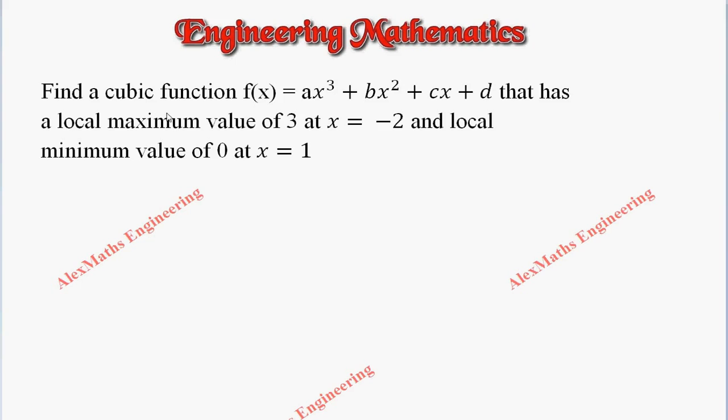In this video we are going to find the cubic function f(x) which is given as ax³ plus bx² plus cx plus d. And they have given certain information like it has local maximum value of 3 at x equals minus 2 and local minimum value of 0 at x equals 1.